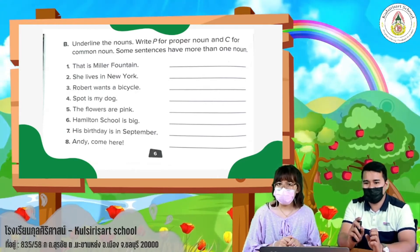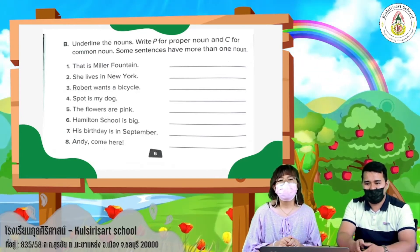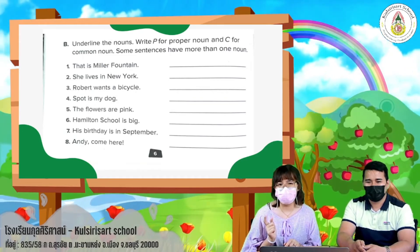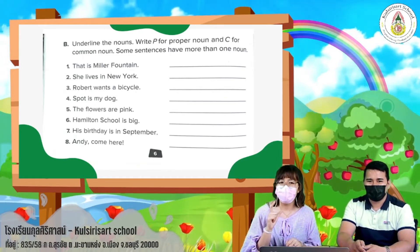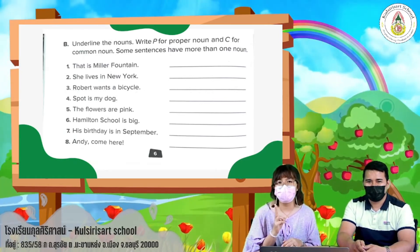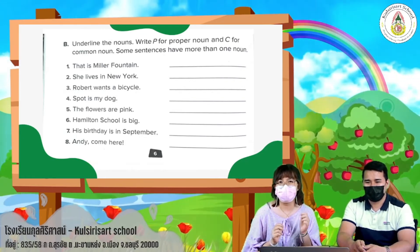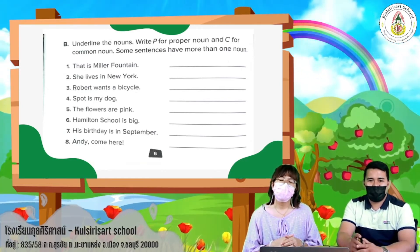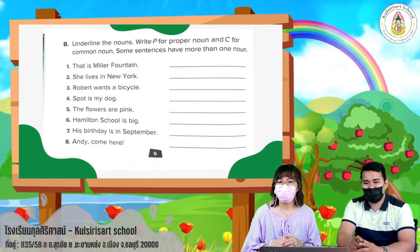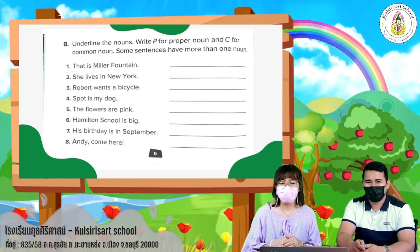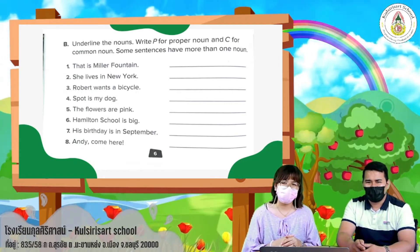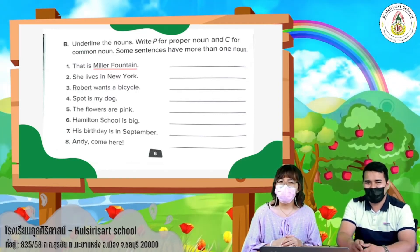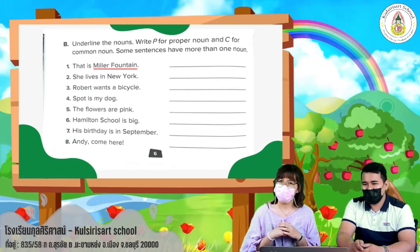Some sentences have more than one noun. Let's start. First sentence: 'That is Miller Fountain.' Miller Fountain — is it common or proper noun? It's a proper noun, because Miller Fountain starts with a capital letter M.